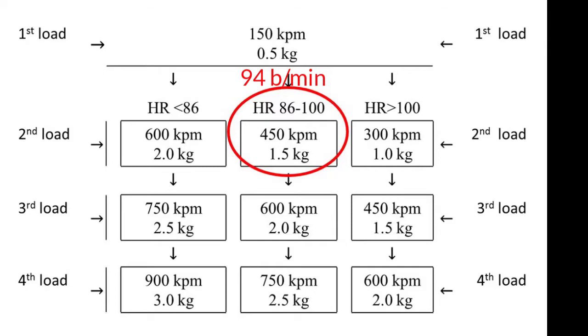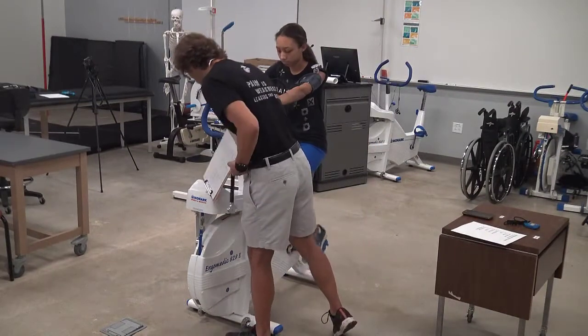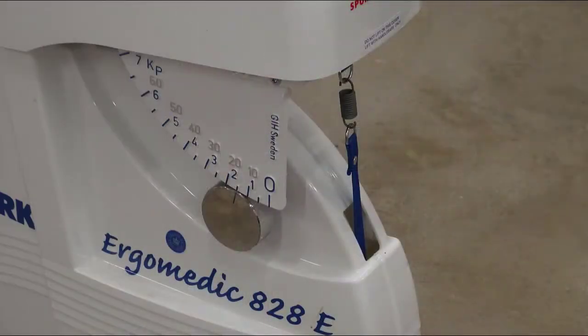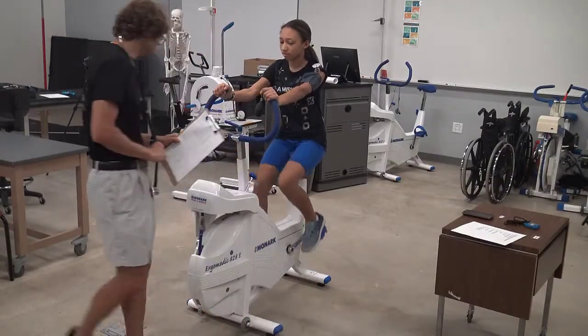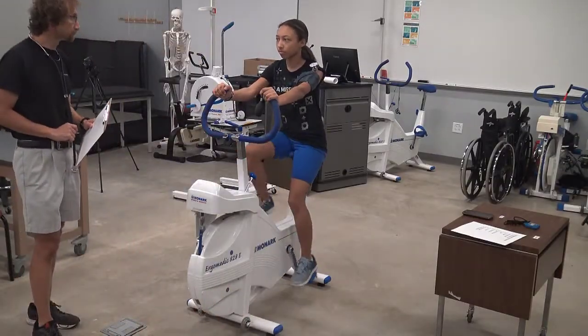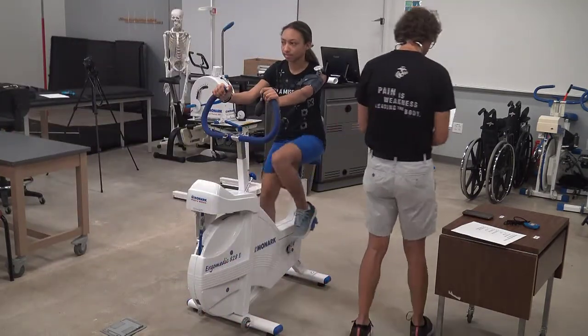For whatever diagram you're using, just be sure that you follow the appropriate columns for the given steady state heart rates that the client achieves. Turn the pendulum so that the total resistance now points to 1.5 kilograms or, if you're using a weighted pan, add the appropriate weight to the pan of the cycle ergometer. Be sure that the client is maintaining the 50 revolutions per minute rate and the stage proceeds as normal.